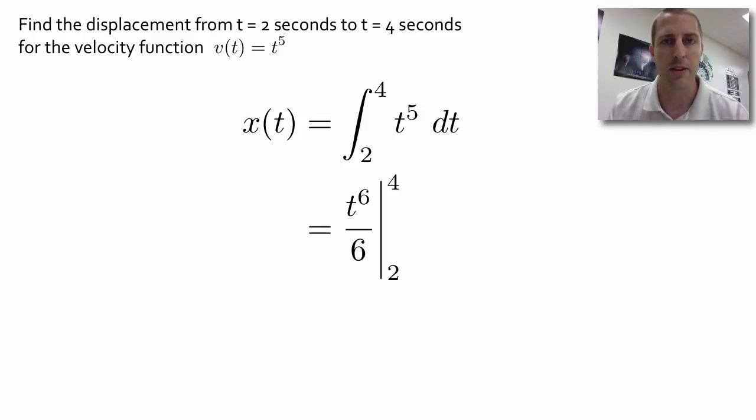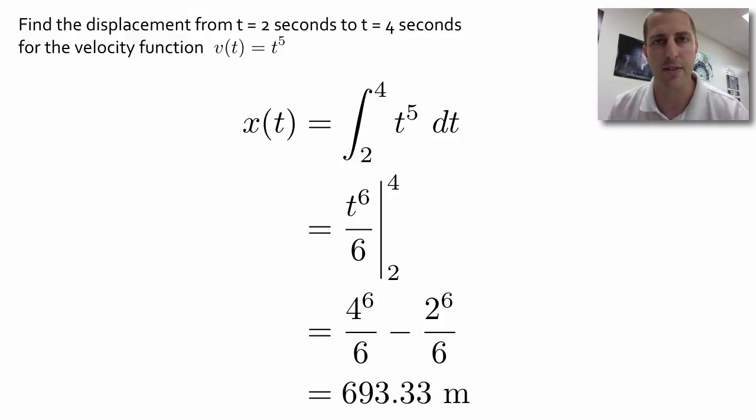What we do with them: we take the limit that's on top, the 4, plug that in for t. Then subtract, plugging in the bottom limit for t. So we plug in 4 for t minus plugging in 2 for t. Punch all that in the calculator, you end up with an actual answer this time. No plus C's or D's or anything like that. You just get an answer.